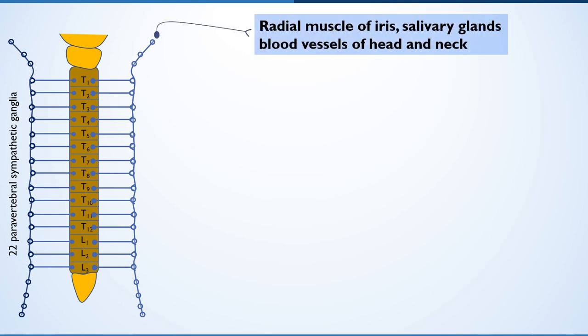After coming out of the cord, these neurons leave the spinal nerve and communicate with the paravertebral chain of 22 sympathetic ganglia. All these ganglia lie laterally on both sides of the spinal cord. In addition, each ganglion is connected to each other by the nerve trunk.